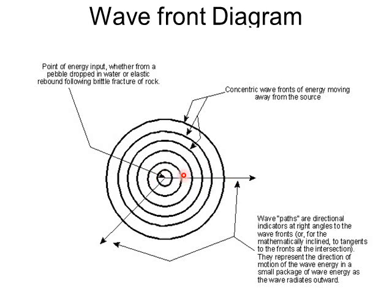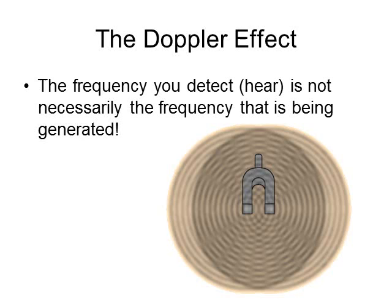On a wavefront diagram, the waves are always traveling perpendicular to the wavefront. These arrows show which direction the waves are traveling at each location — in both cases, the direction is perpendicular to the wavefront. So if you were to measure the wavelength, you'd always measure along the path from one ring to the next.